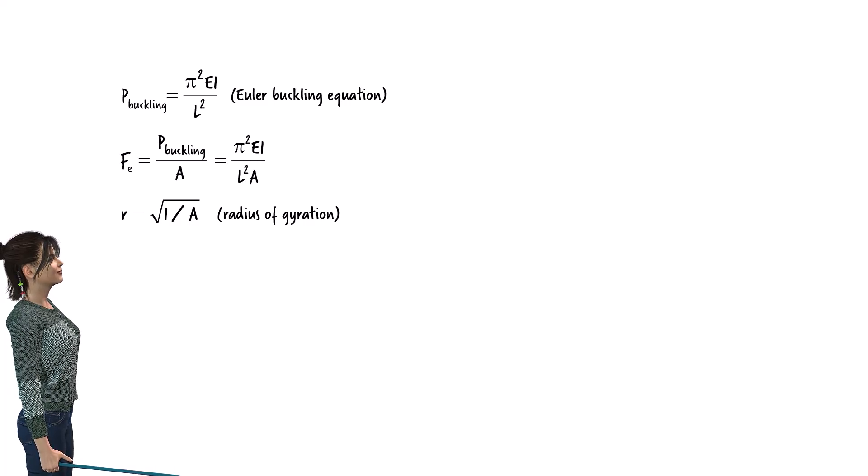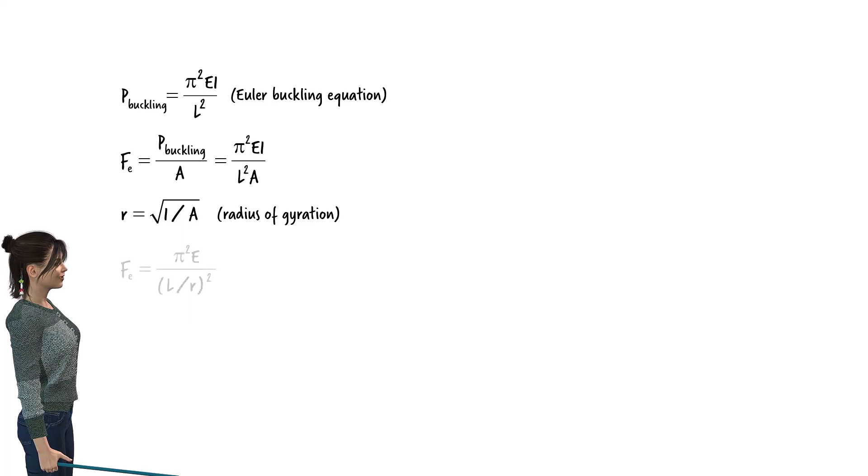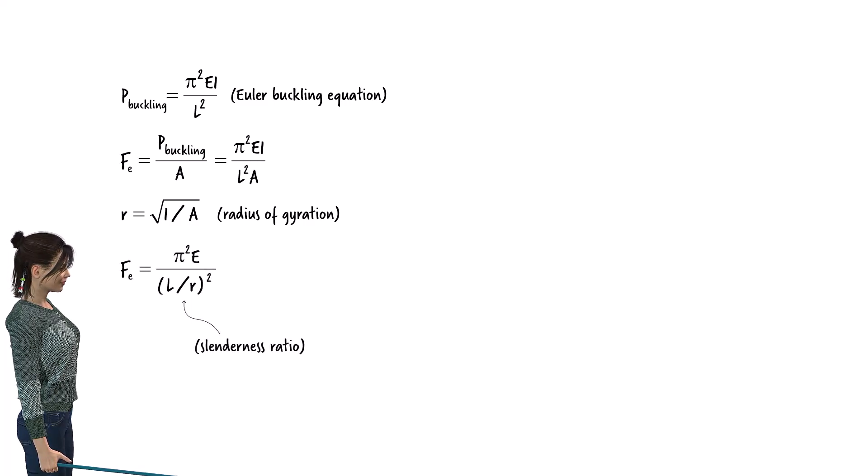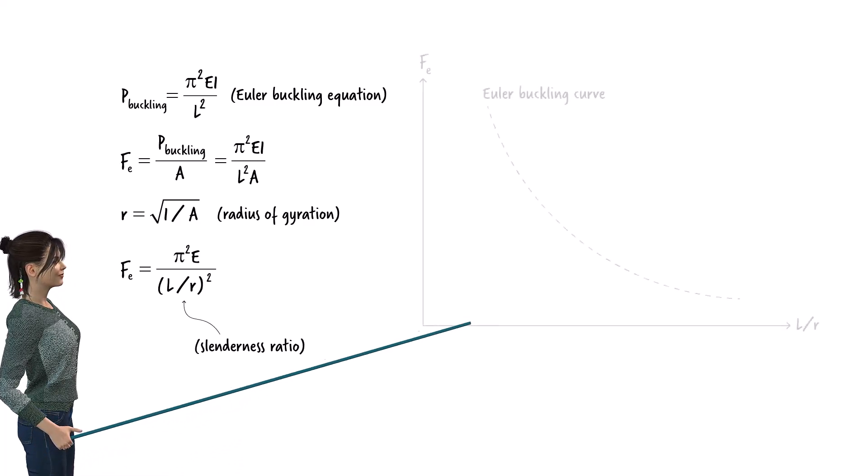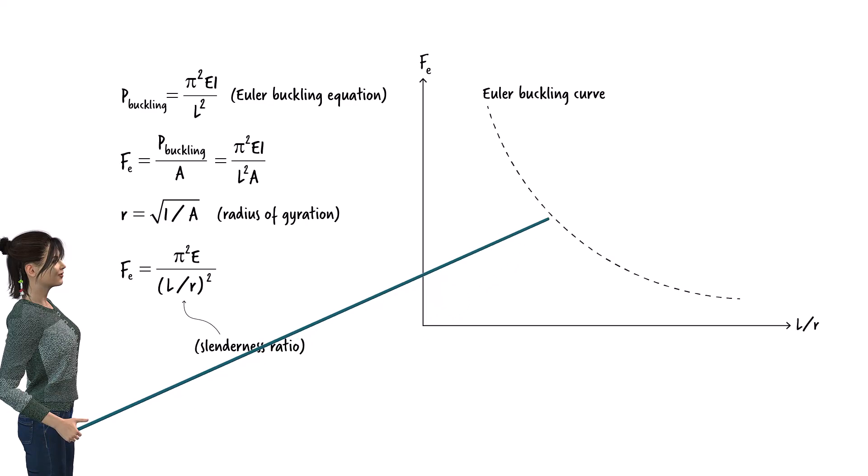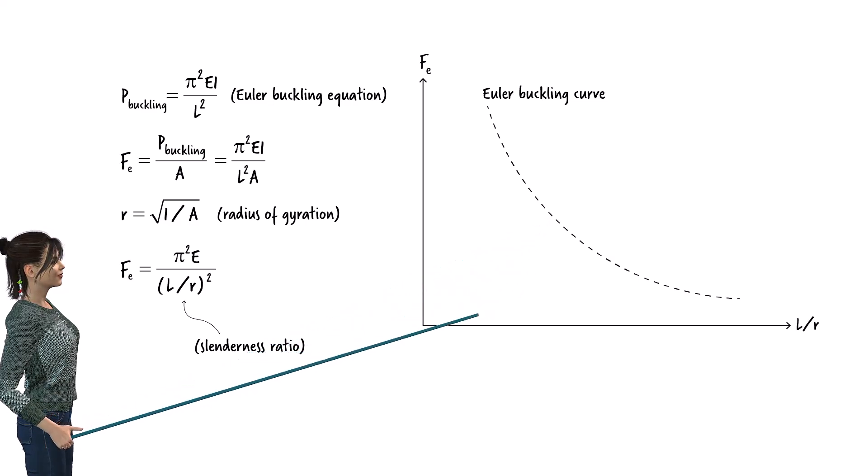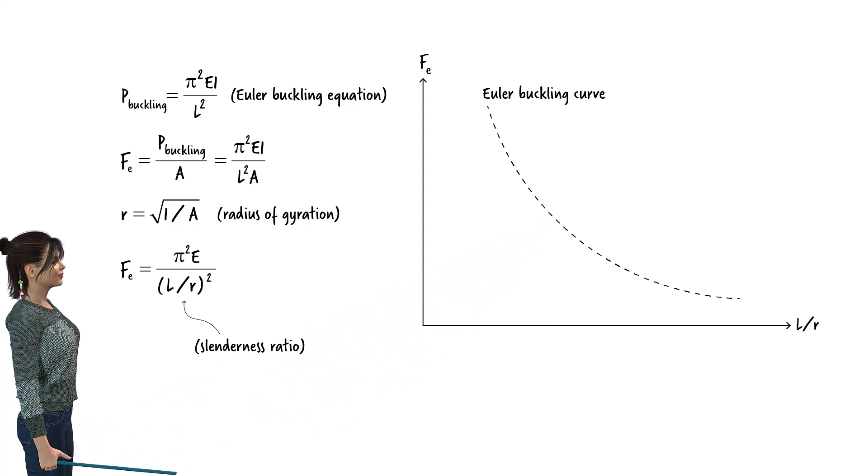Therefore, we can rewrite the buckling stress equation accordingly. We refer to L over R as the slenderness ratio. Here is the buckling stress graph as a function of the slenderness ratio. This graph gives us a theoretical model for predicting the compressive stress that causes the member to buckle.